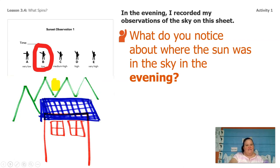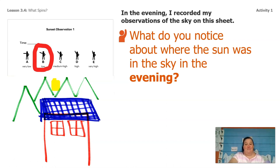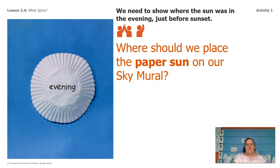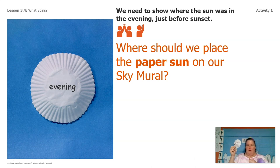So I sketched what I saw in the horizon and where the sun was. This was at 7:30 in the evening. Were you guys able to make evening predictions as well? What do you notice about where the sun was in the sky in the evening? My next step is going to be to put my paper sun on the sky mural to show where the sun was in the evening. Let's remember where I put it in the sketch and see if we can figure out where to put it on the mural.